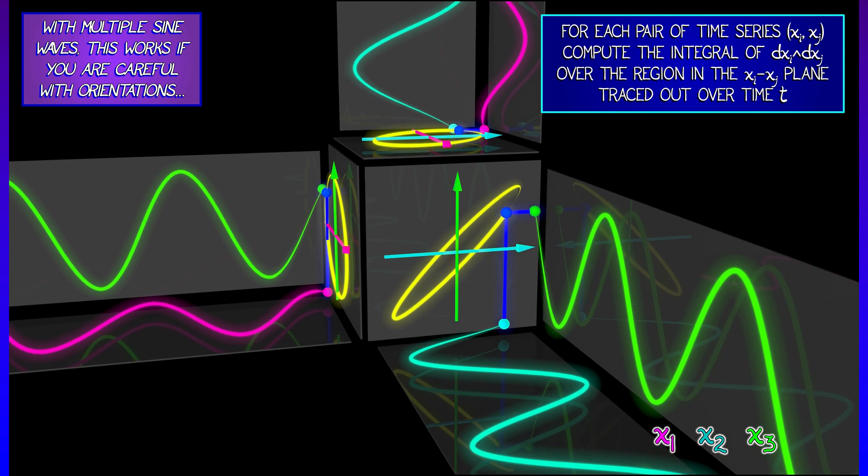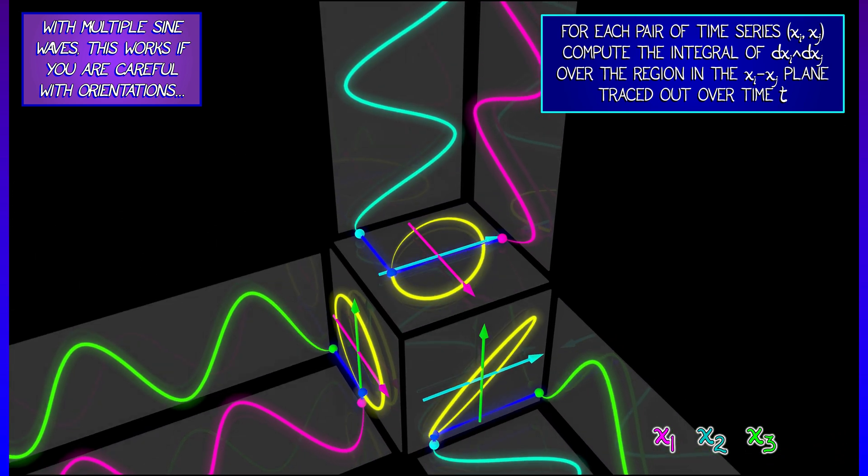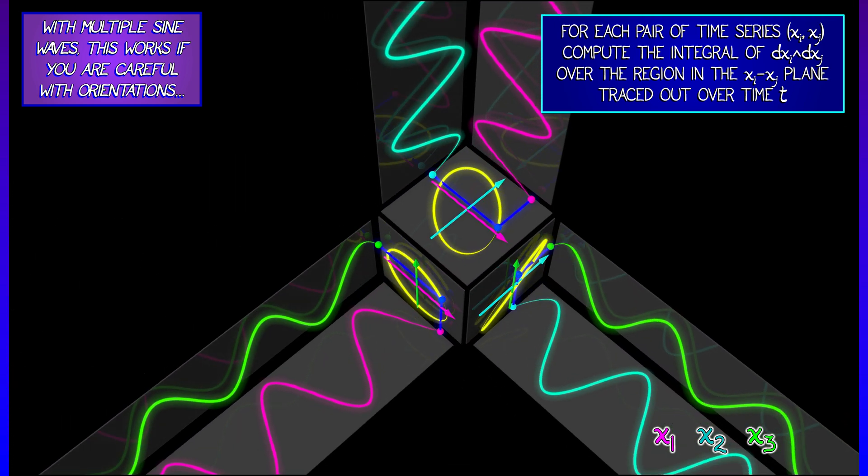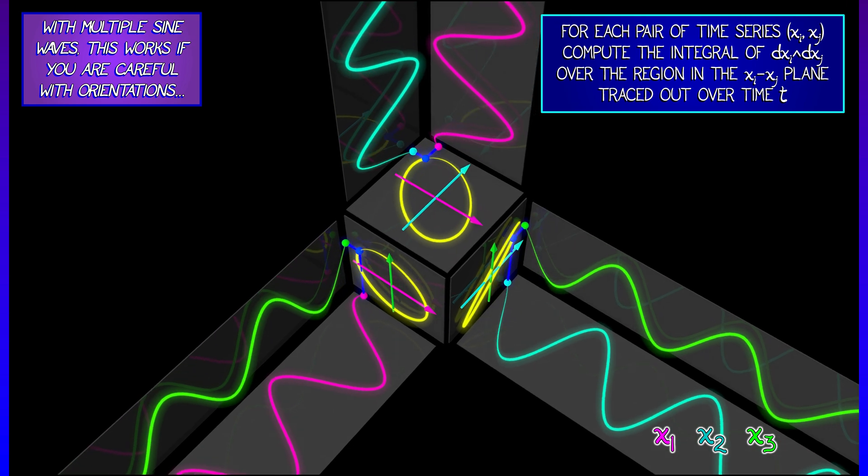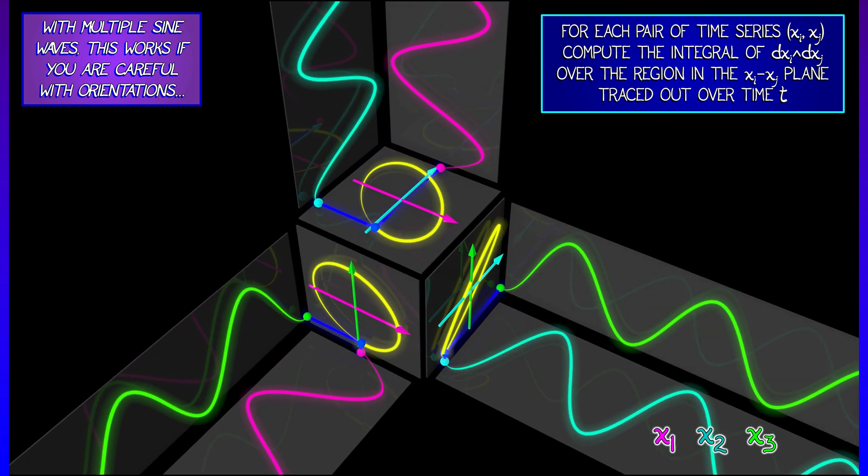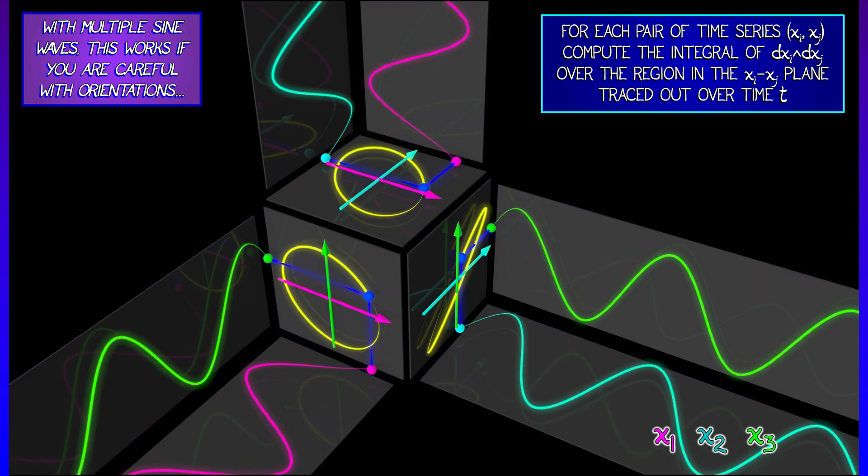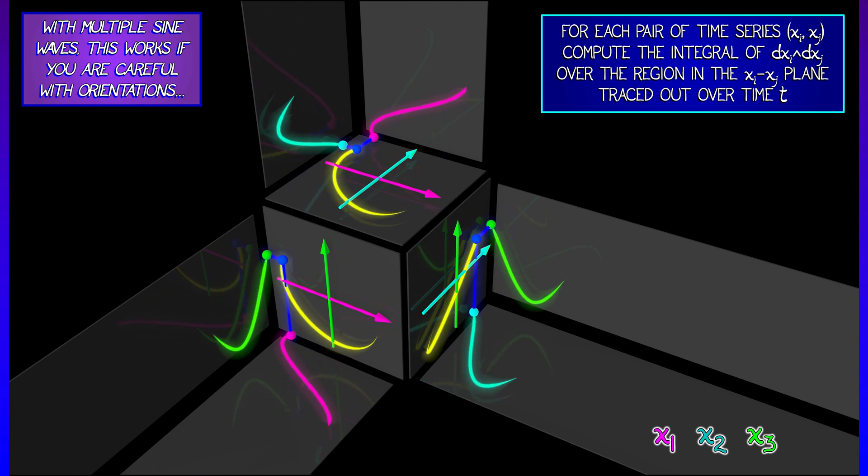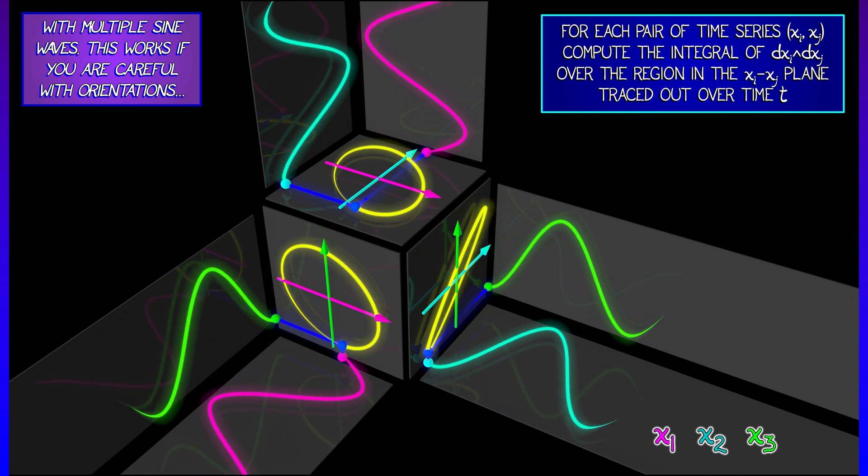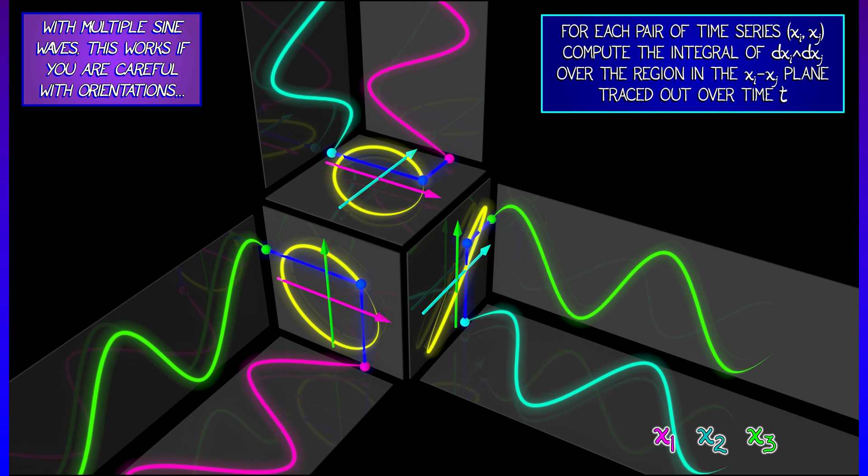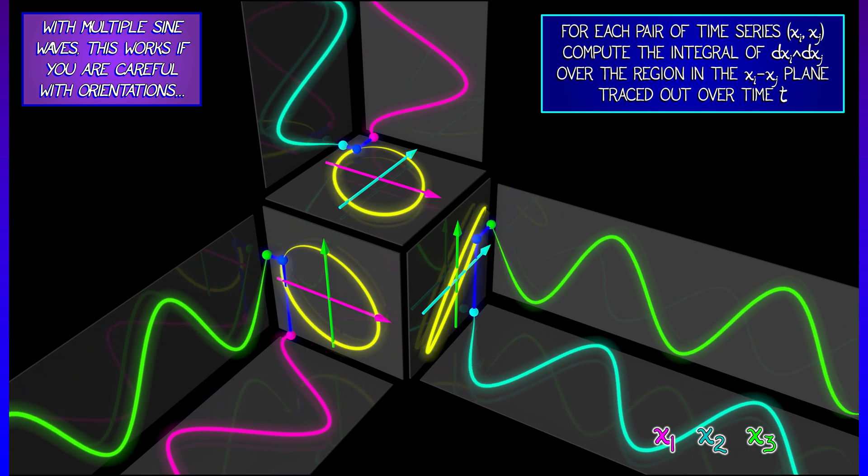If I focus on the ith and the jth time series, plot the curve in the xi xj plane that is traced out by time t, and then integrate the basis two-form, dxi wedge dxj over that region in the xi xj plane, then that's telling me something about leadership.